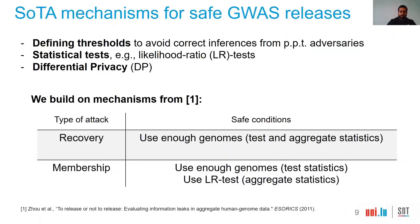We built our own mechanism from a paper published in ESHG 2011, and in this table we summarize the safe conditions for GWAS releases. To protect tests and aggregate statistics against recovery attacks, we need to ensure we are using enough genomes. The same applies for protecting test and statistical results from membership attacks. However, to protect aggregated statistics from membership attacks, we rely on likelihood-ratio tests to enforce that no individual can be identified.